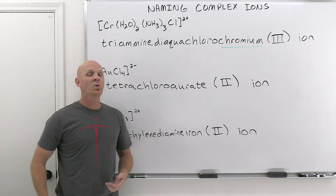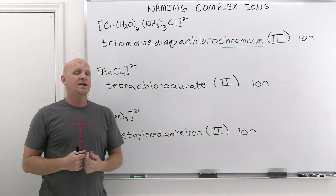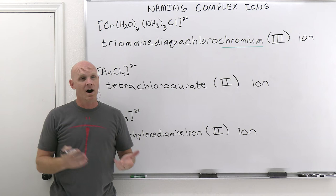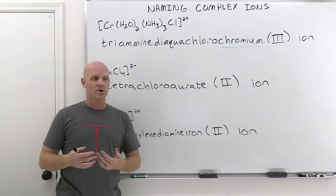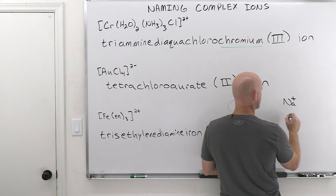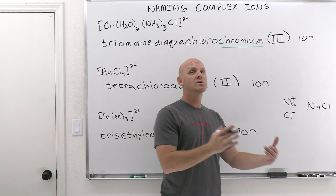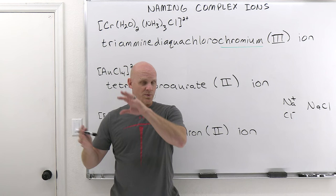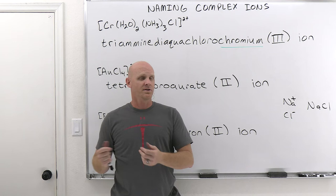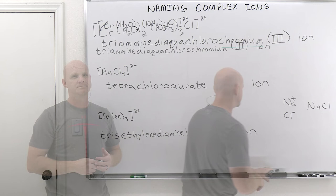Now we'll do examples of entire coordination compounds where we have both cation and anion. It works just like naming other ionic compounds — you name the cation first, the anion second. If they're simple, great; if they're complex, we apply the new rules we've learned. In the last example, we'll see a case where both the cation and the anion are complex ions.